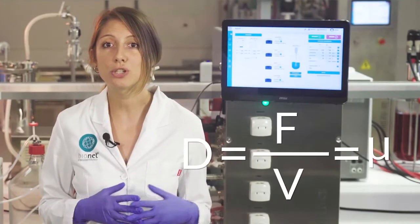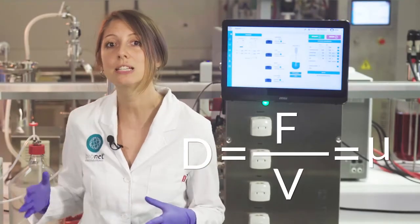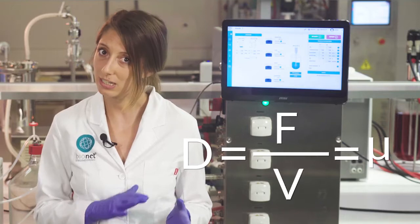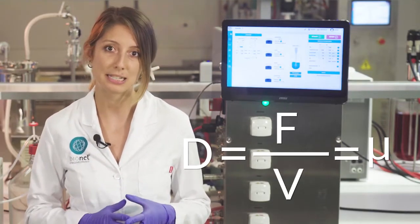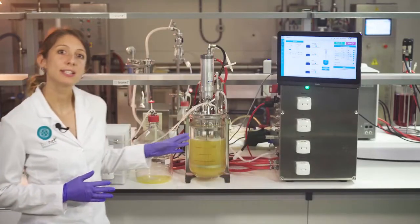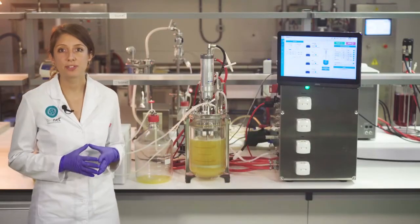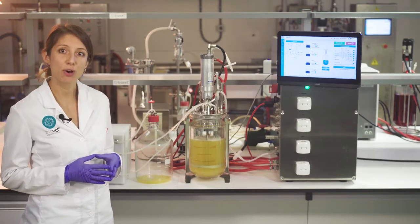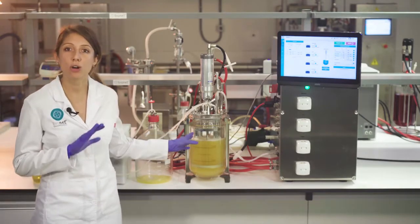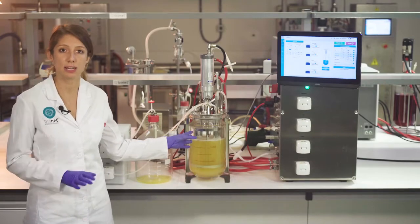Therefore, the user will choose the dilution rate that results in the specific growth rate in the log phase at the point where no substrate is being accumulated. In this particular case, this will be 0.15 per hour, which is as close as possible to the maximum growth rate of this microorganism, while no accumulation of substrate is taking place.